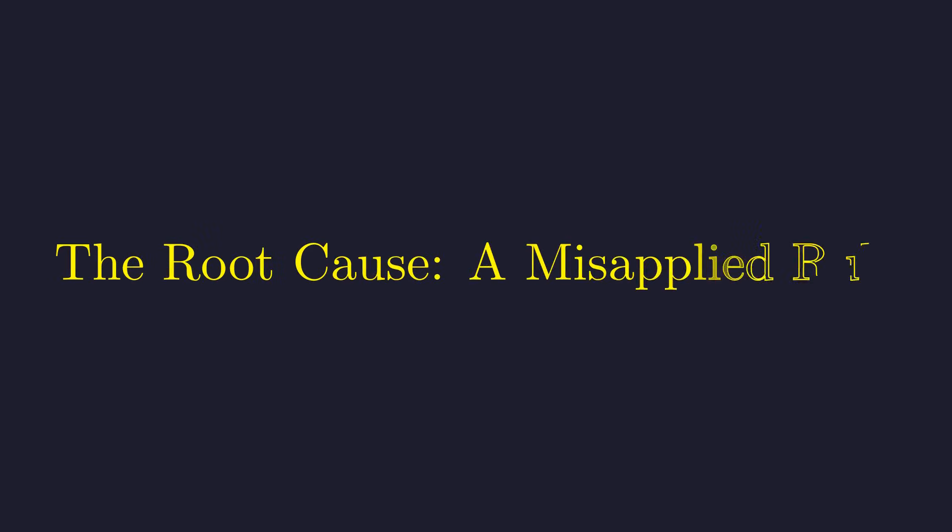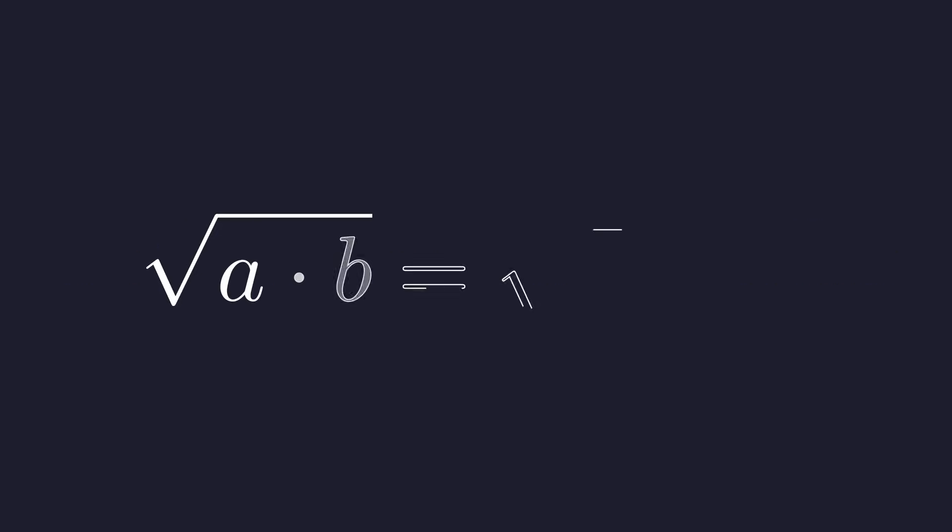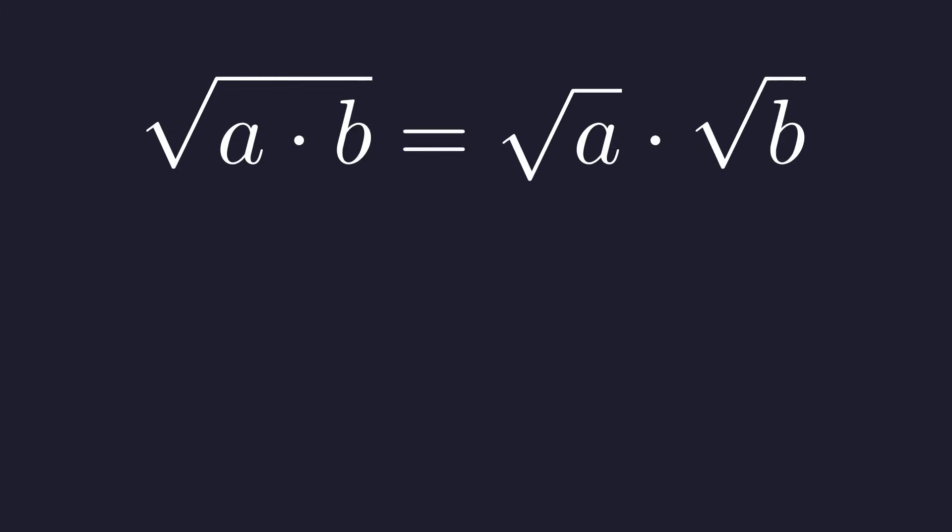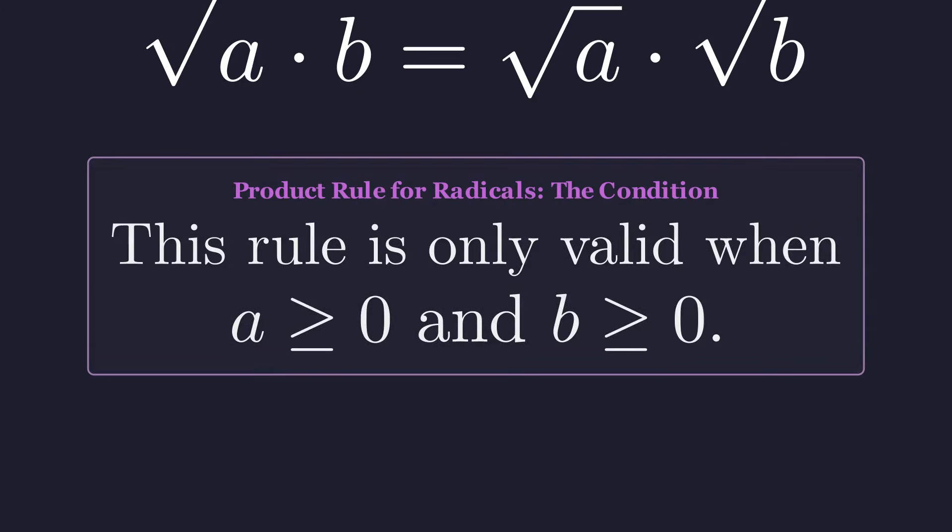The answer lies in a rule we all learned, but with a condition most of us probably forgot. You've probably seen this. The square root of a times b equals the square root of a times the square root of b. But here's the catch. This only works when a and b are both non-negative.